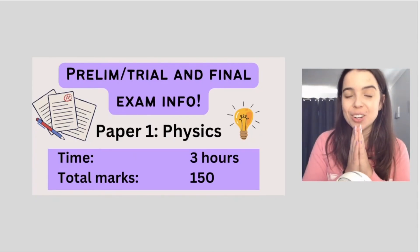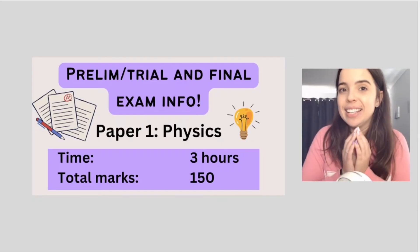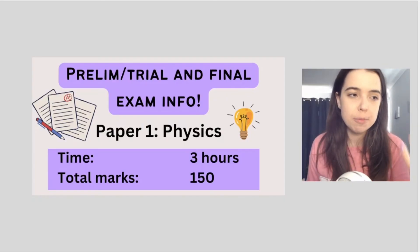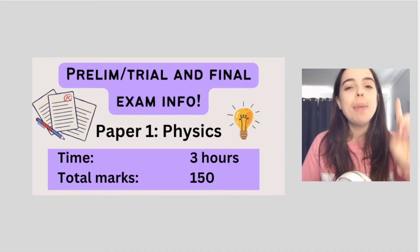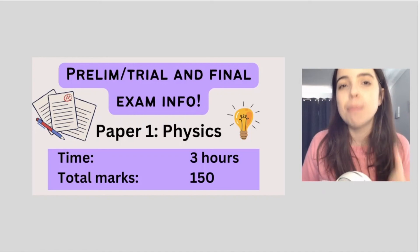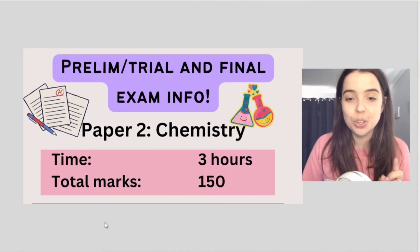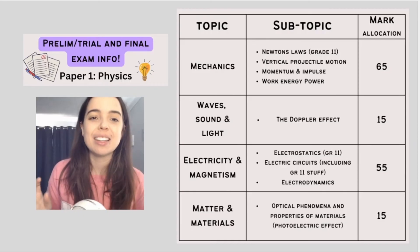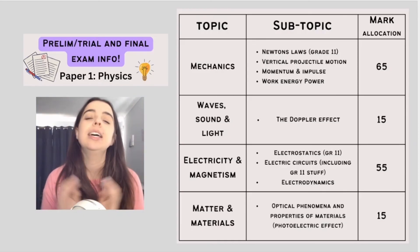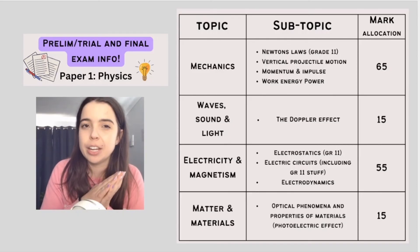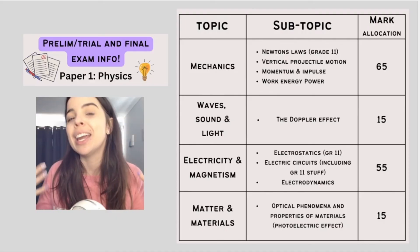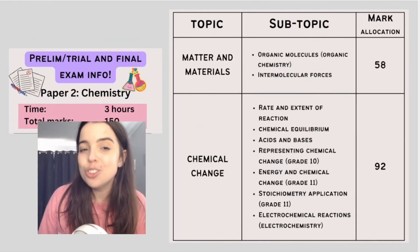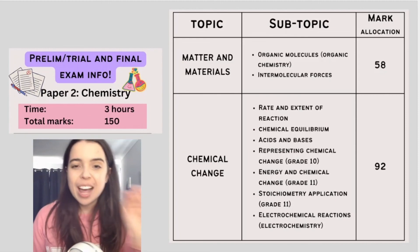In my booklet, as I've mentioned before, it contains information about prelim or trial exams and final exam information. In the booklet, I very briefly break down the fact that for your physical sciences exams, so your trial exams or prelim exams and your final exams, you'll be writing two papers. Paper one is physics. It'll be 150 marks and it'll be three hours long. You also have paper two, which is your chemistry paper. 150 marks. It's also three hours long. What I've done for you in this document is I've taken each paper, I've broken it down into the main topics to be tested, the subtopics that fall under these, and I show you the mark allocation for each. Now I will go over this in another video to come in the future, but this is a very brief overview of what you can expect in your final exams and which topics to prepare for which paper and the marks allocated to each section.